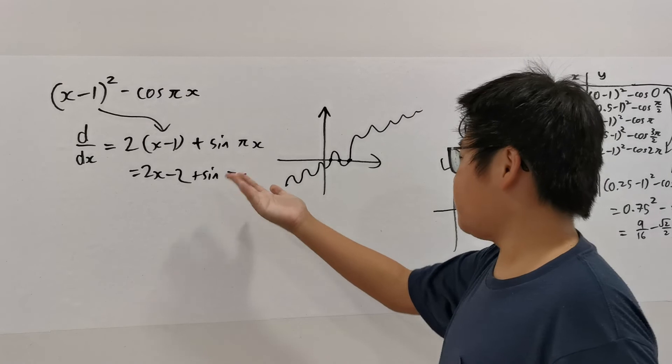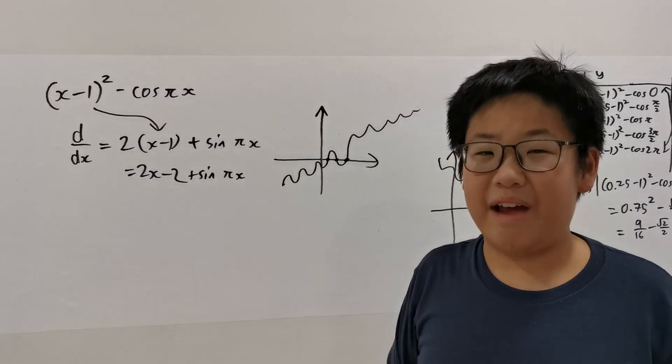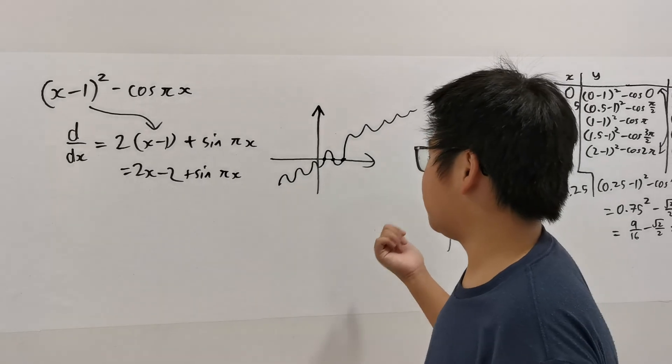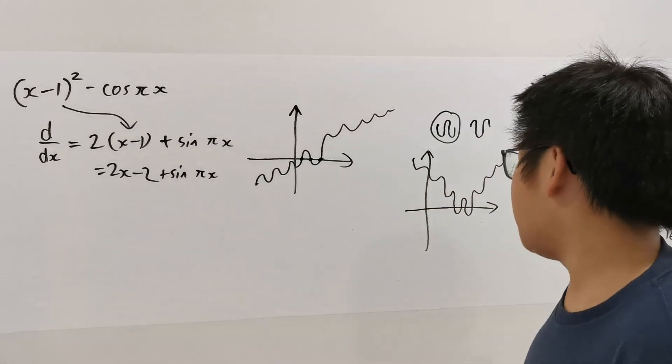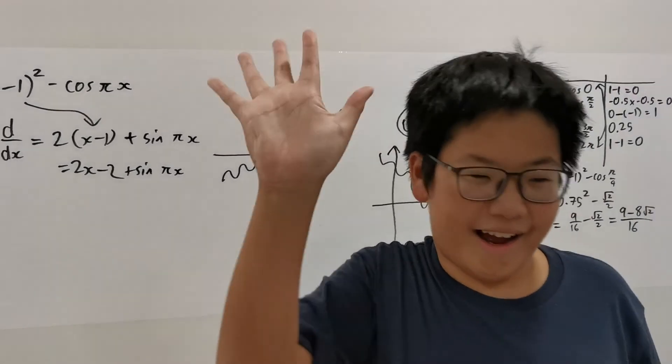And there you have it! Using the d over dx to give you an idea of how many maximal or minimal the function should have. And giving you a general idea of the gradient. Thank you and bye!